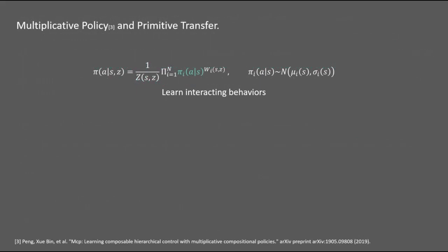We use a multiplicative policy structure to facilitate the primitive transfer. First, the agent is trained to learn how to interact with an object without any external task reward by latent conditioned policy.